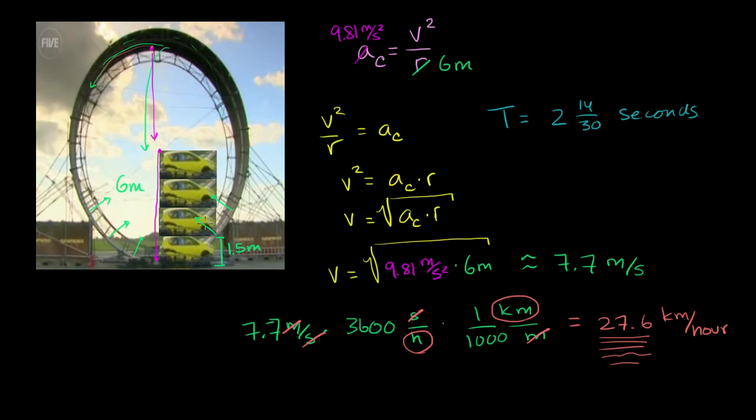And what is the distance that it traveled? If we assume that this thing is circular, although it looks like it's a little bit more egg-shaped, if we assume that it's circular, then the distance traveled is the circumference of the circular loop-de-loop. The circumference is 2π times the radius, which is equal to 2π. And in the previous video, we figured out that the radius was 6 meters. So it's 2π times 6 meters, which is equal to 12π meters.